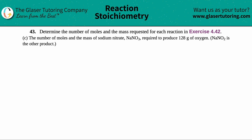Number 43: determine the number of moles and the mass requested for each reaction in exercise 4.42. This is letter C of that problem set. We want to find out the number of moles and the mass of sodium nitrate, NaNO3, required to produce 128 grams of oxygen. They also told us that sodium nitrite, NaNO2, is the other product.